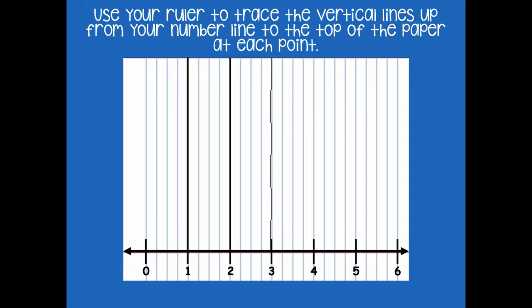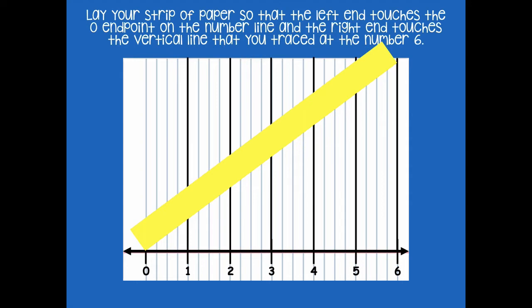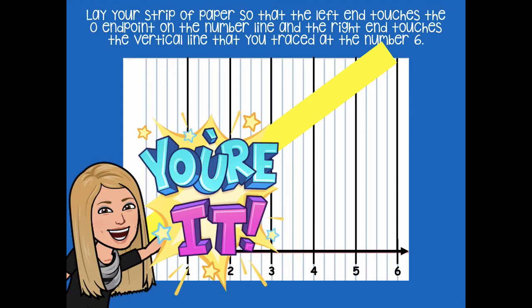Now we're going to lay your strip of paper so that the left end touches the zero end point on the number line and the right end touches the vertical line that you traced at the number six — it should look like this. See how my left end is at zero and my right end is at six. Pause the video, move your paper strip up just like that, and then click play when you're ready for the next step.